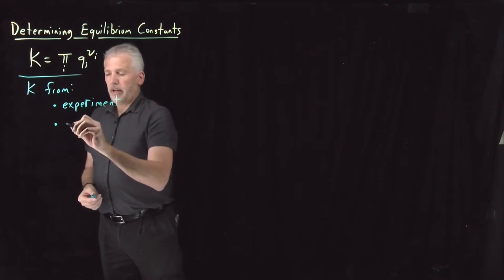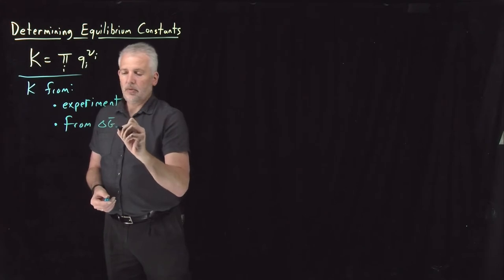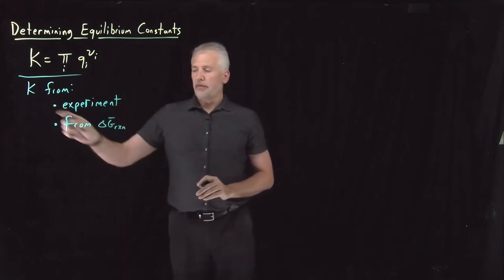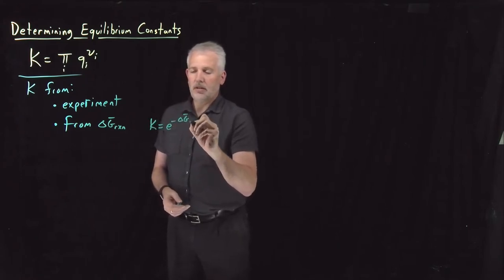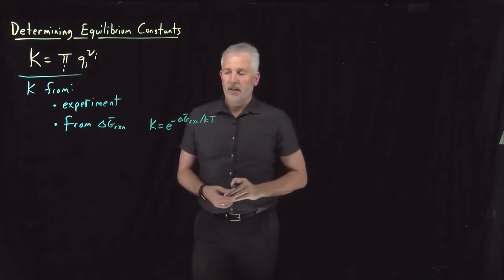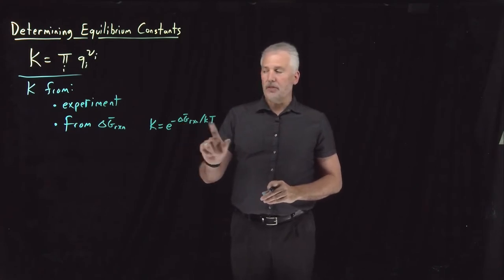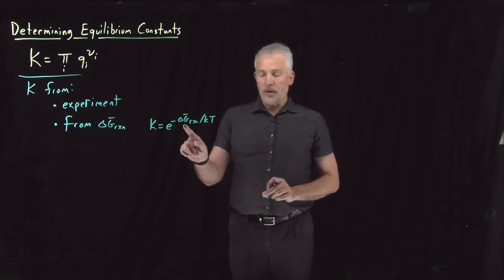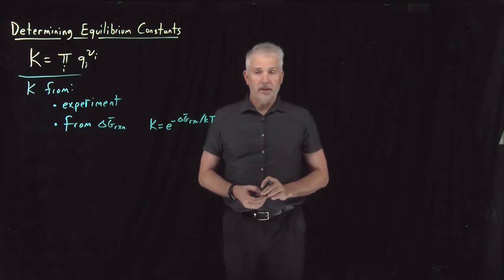There's another way that we've seen: from the free energies. We can use the free energy change of a reaction to calculate the value of K. We've seen an equation that says the value of an equilibrium constant is e to the minus Gibbs free energy change for that reaction divided by RT, or divided by kT. So if we know the Gibbs energy change for that reaction, we can calculate K directly from thermodynamics.